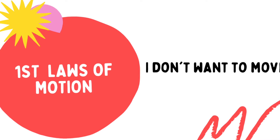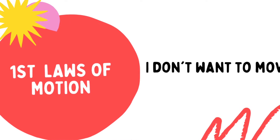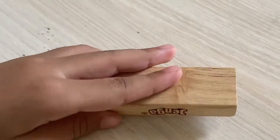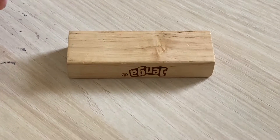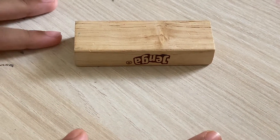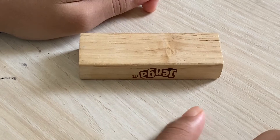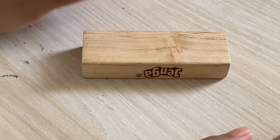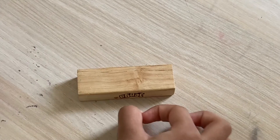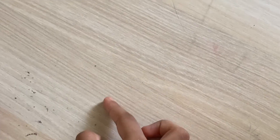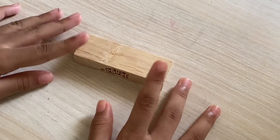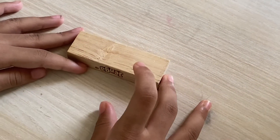This is an object. It is neither moving nor doing anything, but unless I give some force. Now, I am going to give some force — it's moving. So, this is the first law of motion.